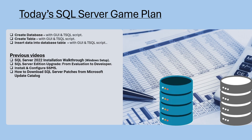Before we jump in, let me quickly explain what a database and a table are. A database is like a digital filing cabinet — it stores and organizes data so that you can easily find, update, and manage the data. Inside that cabinet, you have tables, kind of like individual folders or spreadsheets, just like you have Excel sheets. Each table holds specific types of data in the form of rows and columns.